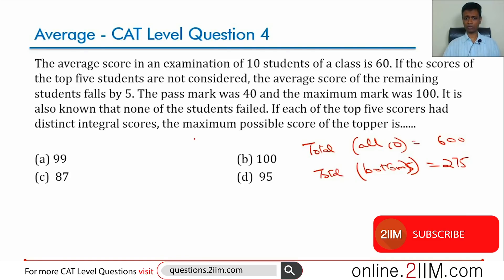The first two inferences are very clear - all 10 add up to 600, bottom 5 add up to 275. So we can straight away say top five add up to 325.